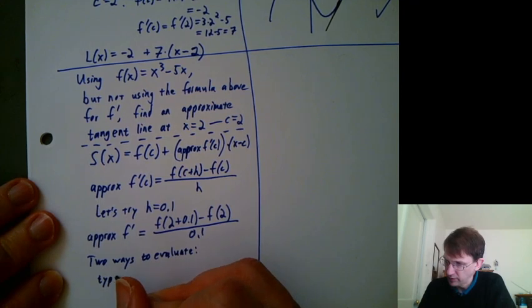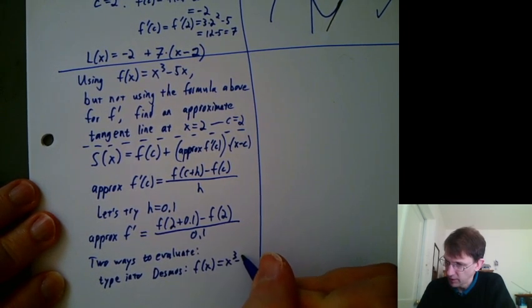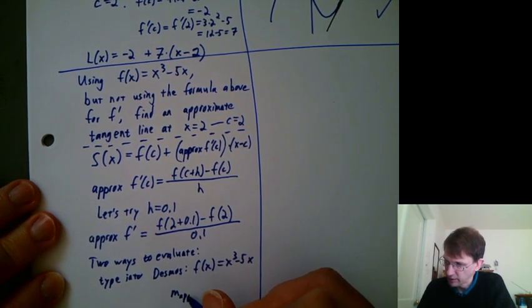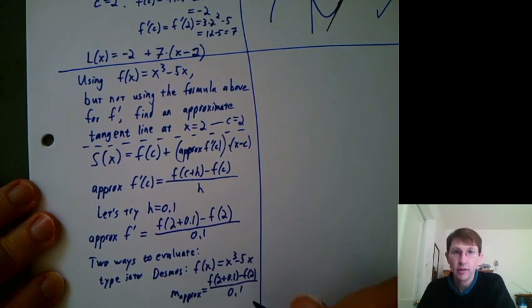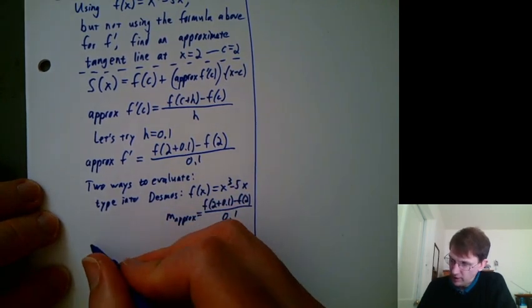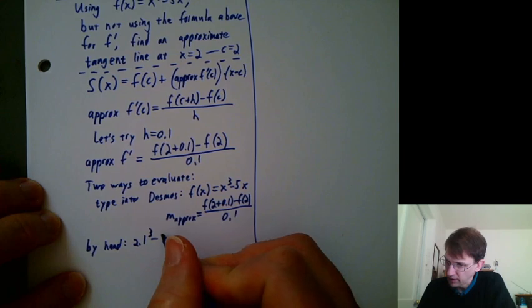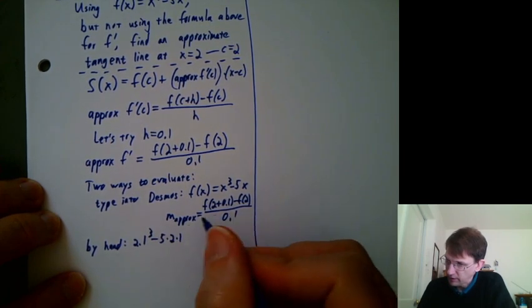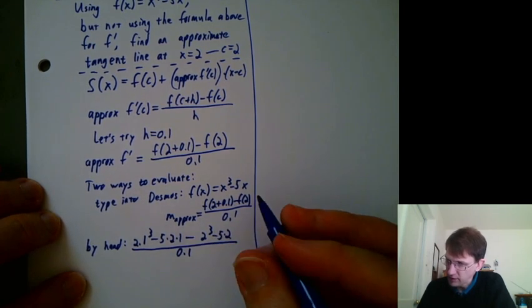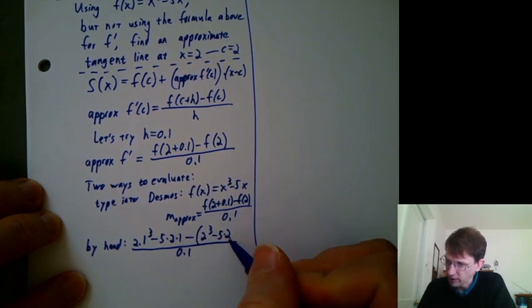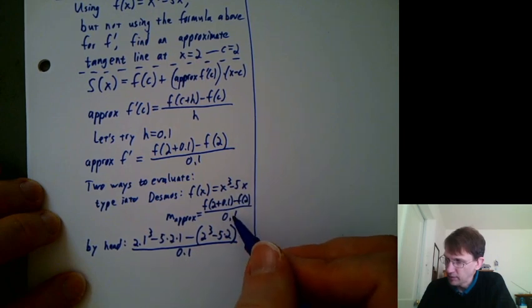One, I could type into Desmos. I could type f(x) = x³ - 5x. And then I could type something like m approx equals [f(2 + 0.1) - f(2)]/0.1. And that would give me a number. Or I could do it by hand, which is not going to be pretty. I would have to do [2.1³ - 5×2.1 - (2³ - 5×2)]/0.1. But I actually made a mistake there. I have to subtract f(2), and f(2) is all of this. So I have to put parentheses like that. So you could do that all by hand, and you have to remember to put parentheses around that. Or you could let Desmos do all the plugging in for you.